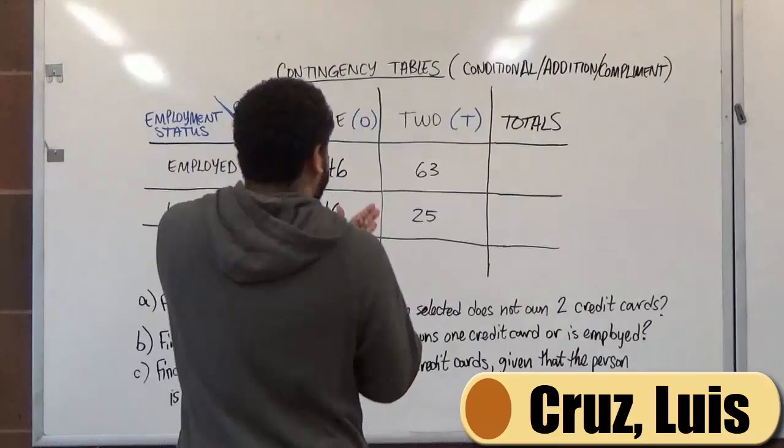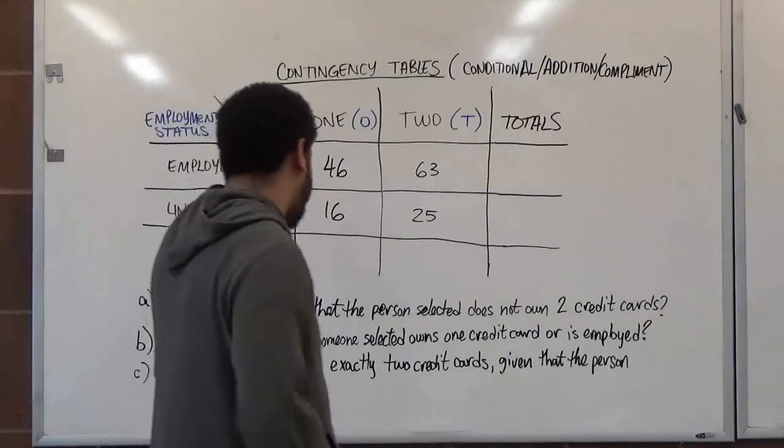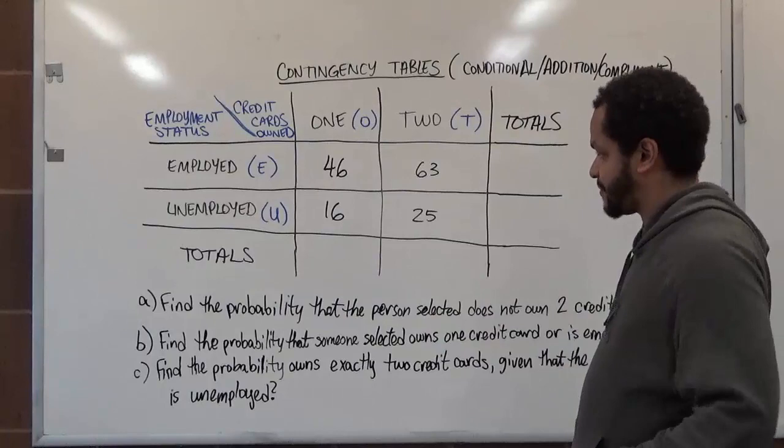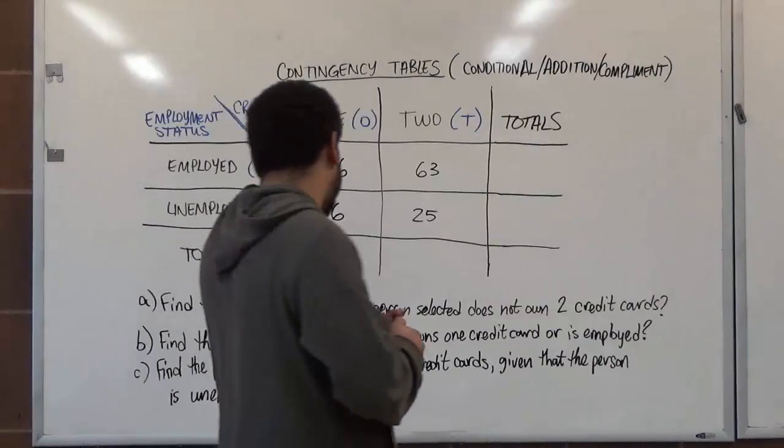Welcome to HelpYourMath.com. In today's video, we'll be covering contingency tables, including conditional probabilities, the addition rule for probabilities, the complement rule for probabilities, and the AND rule for probabilities — which is a multiplicative rule. Because these are not independent events, we'll be dealing with a dependent multiplication rule.